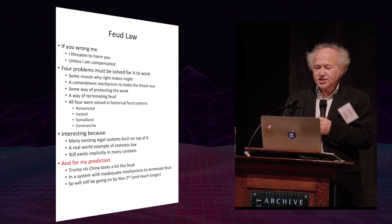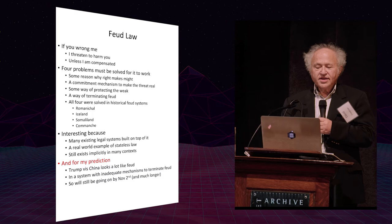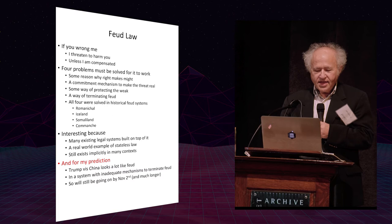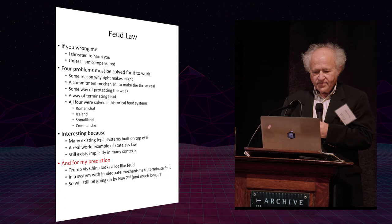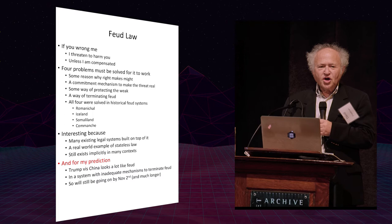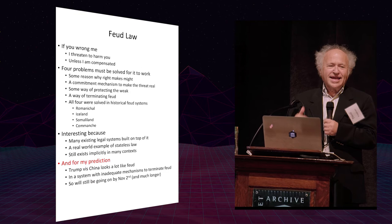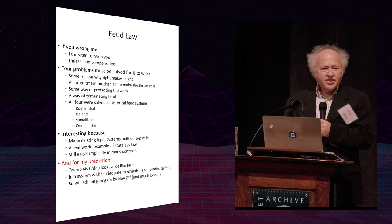The basic rule of feud law is that if you wrong me, I threaten to harm you unless I am compensated. And there are four problems that must be solved in order for that to work. The first problem is some reason why right makes might. You don't want to have a situation where it's profitable for me to claim you've wronged me and demand compensation when in fact you haven't. So in any workable feud system, there has to be some reason why my threat to harm you is more believable when you're guilty than when you're innocent.